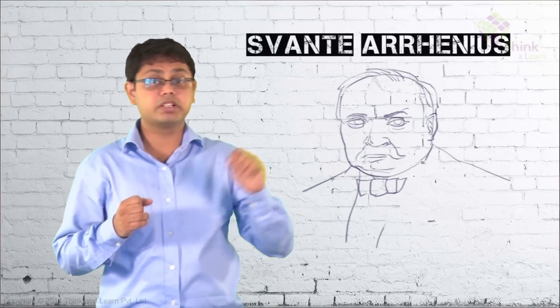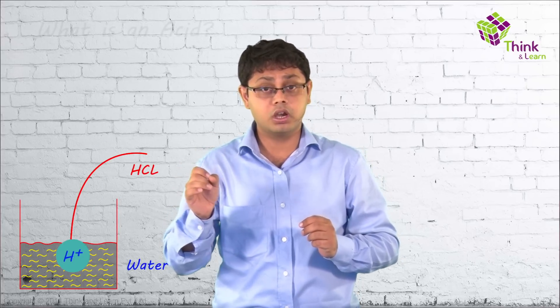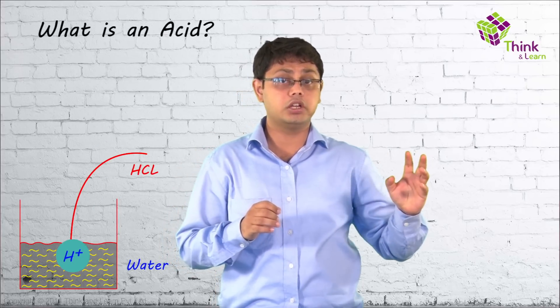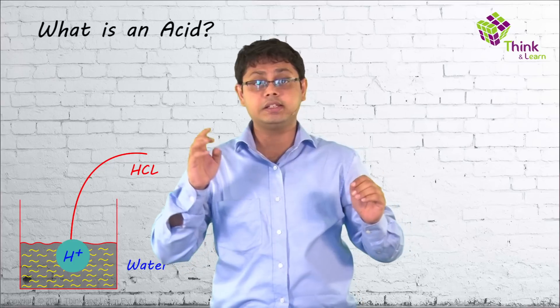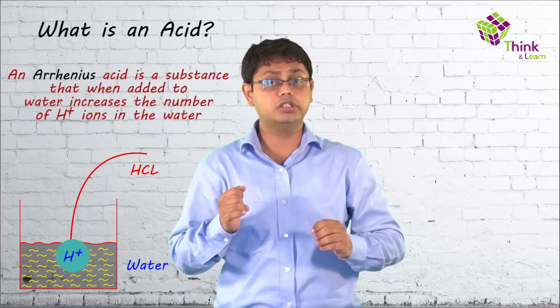And it was in 1887 that Savante Arrhenius presented the idea of electrolytic dissociation. What he said was very simple. When a particular substance is dissolved in water, it produces hydrogen ions, and then he called that an acid. Therefore, all acids that follow this are called Arrhenius acids.